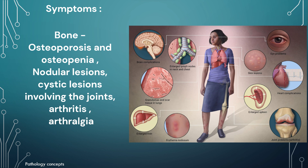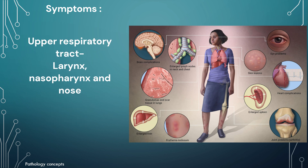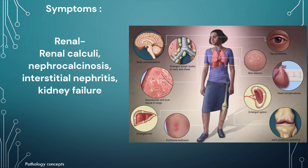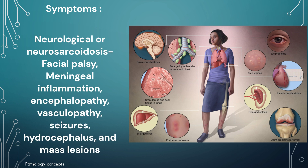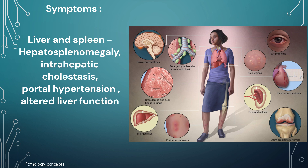Bone involvement includes osteoporosis, osteopenia, nodular and cystic lesions involving joints, arthritis, and arthralgia. The upper respiratory tract — larynx, nasopharynx, and nose — may also be affected. Renal involvement includes renal calculi, nephrocalcinosis, interstitial nephritis, and kidney failure. Cardiac involvement symptoms include heart failure and syncope. Neurosarcoidosis shows facial palsy, meningeal inflammation, encephalopathy, vasculopathy, seizures, hydrocephalus, and mass lesions. Liver and spleen involvement includes hepatosplenomegaly, intrahepatic cholestasis, portal hypertension, and altered liver function.